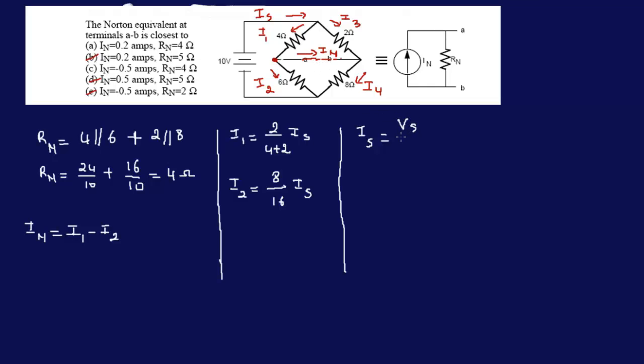IS equal to V over R. IS is the total current through the entire circuit, so that would be VS, source voltage, over the total resistance from there. The total here would be 4 and 2 would be in parallel, 6 and 8 would be in parallel. Let's call this RS or total. This is 10. RS is 4 parallel with 2, series with 6 and 8 parallel.